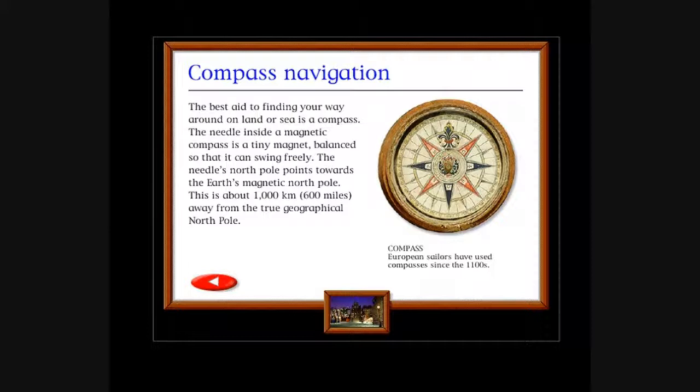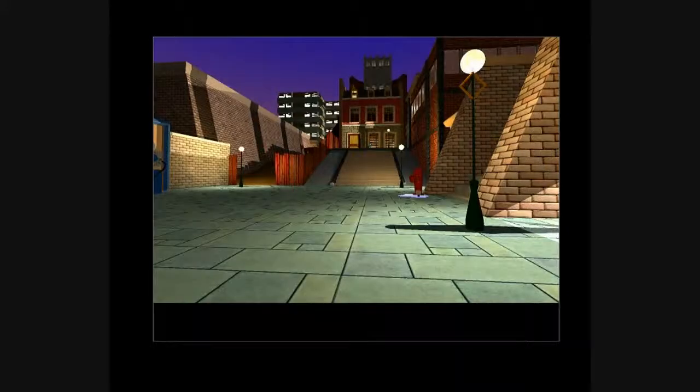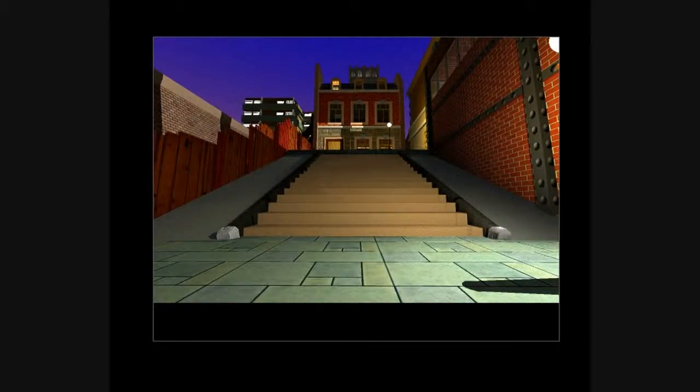The best aid to finding your way around on land or sea is a compass. The needle inside a magnetic compass is a tiny magnet balanced so it can swing freely. The needle's north pole points towards the earth's magnetic north pole. This is about 1,000 kilometers (600 miles) away from the true geographical north pole. So it's lying, compass. European sailors have used compasses since the 1100s. So it's 600 miles off, so if you wanted to go to the north pole, go 600 miles to the right, I suppose, of where the magnet's pointing for the compass.